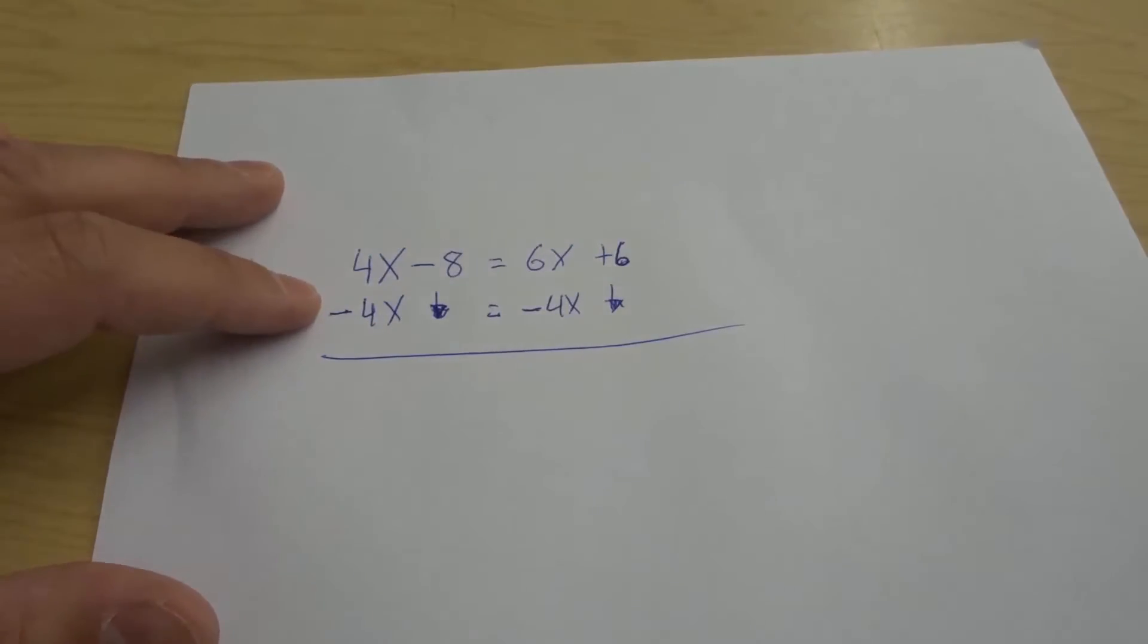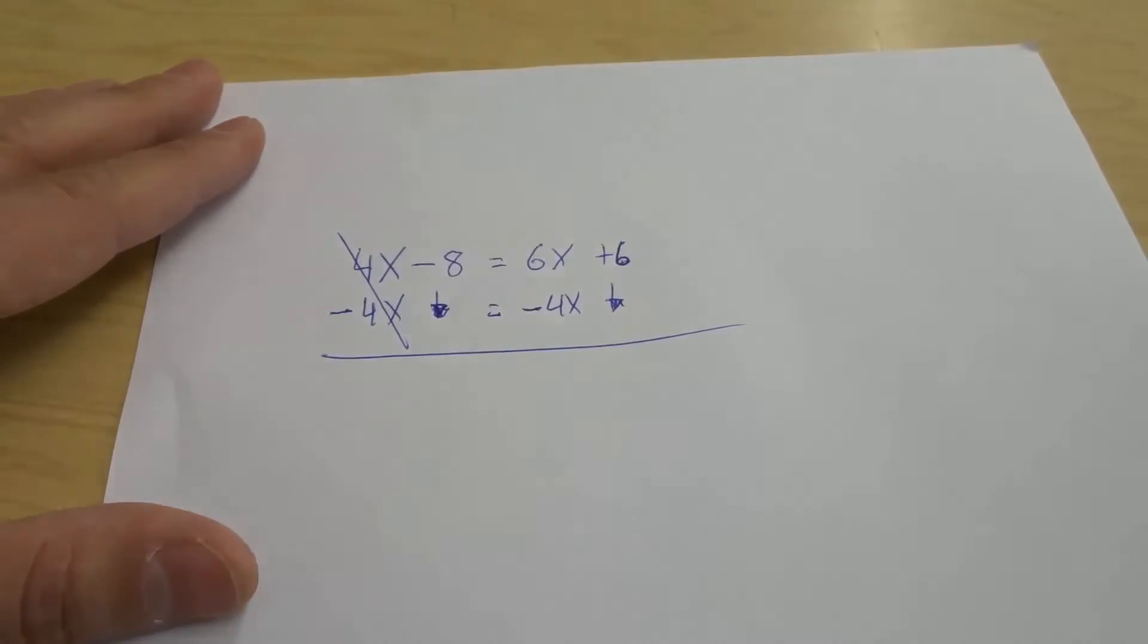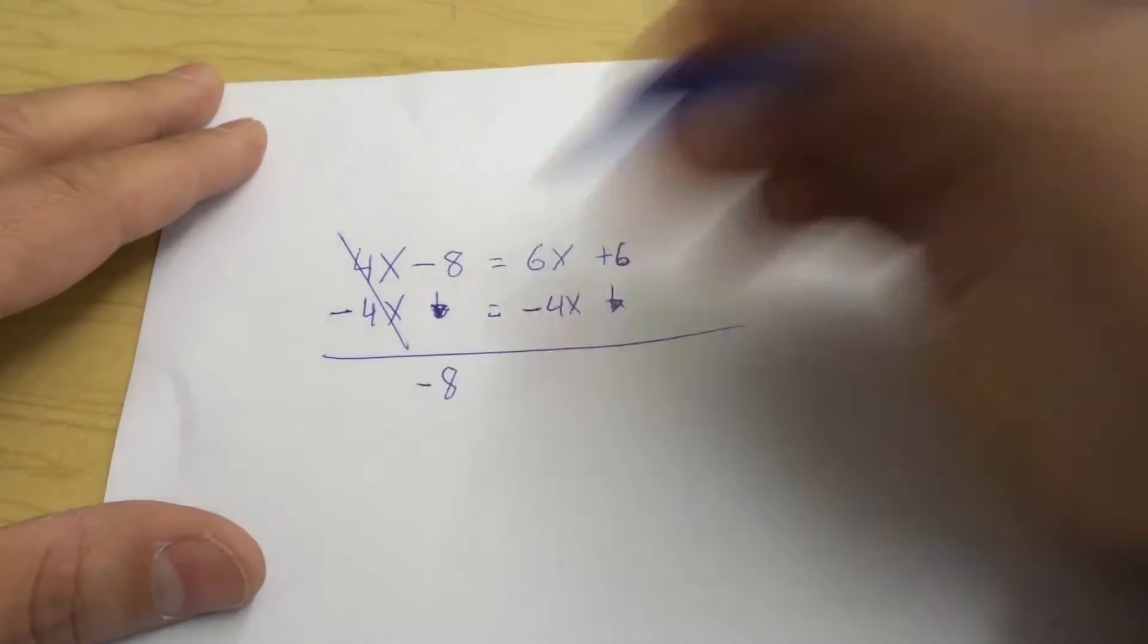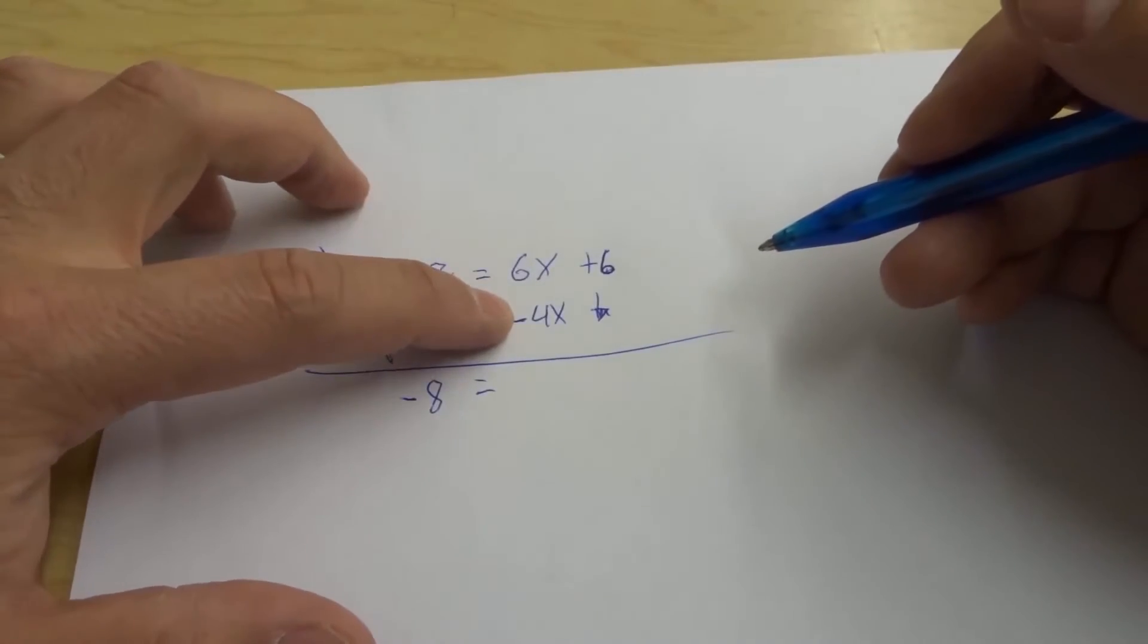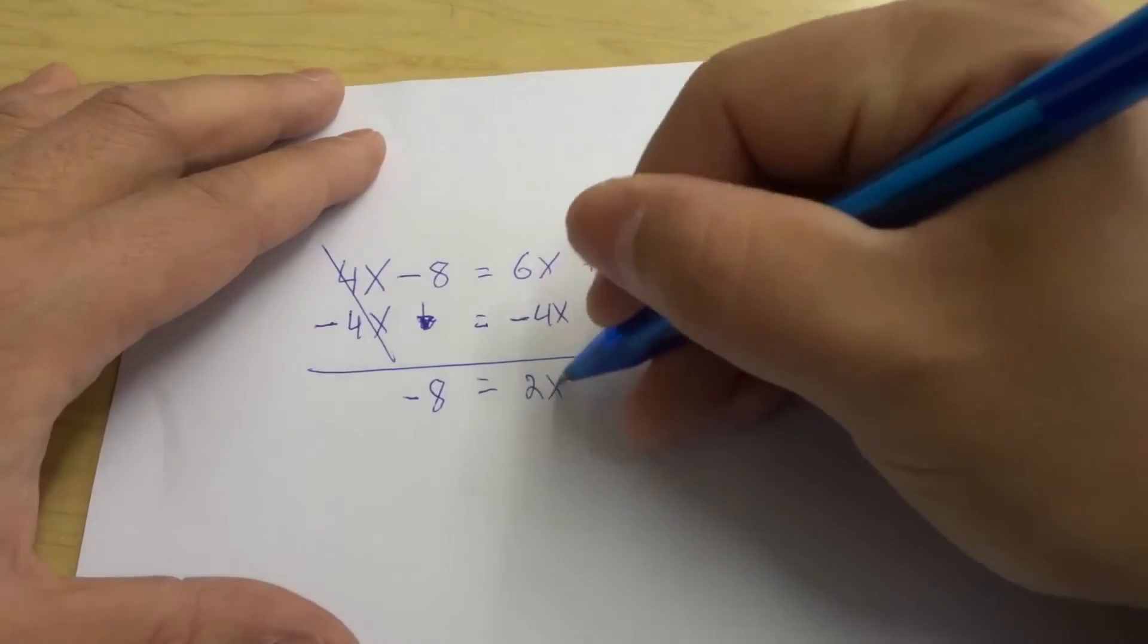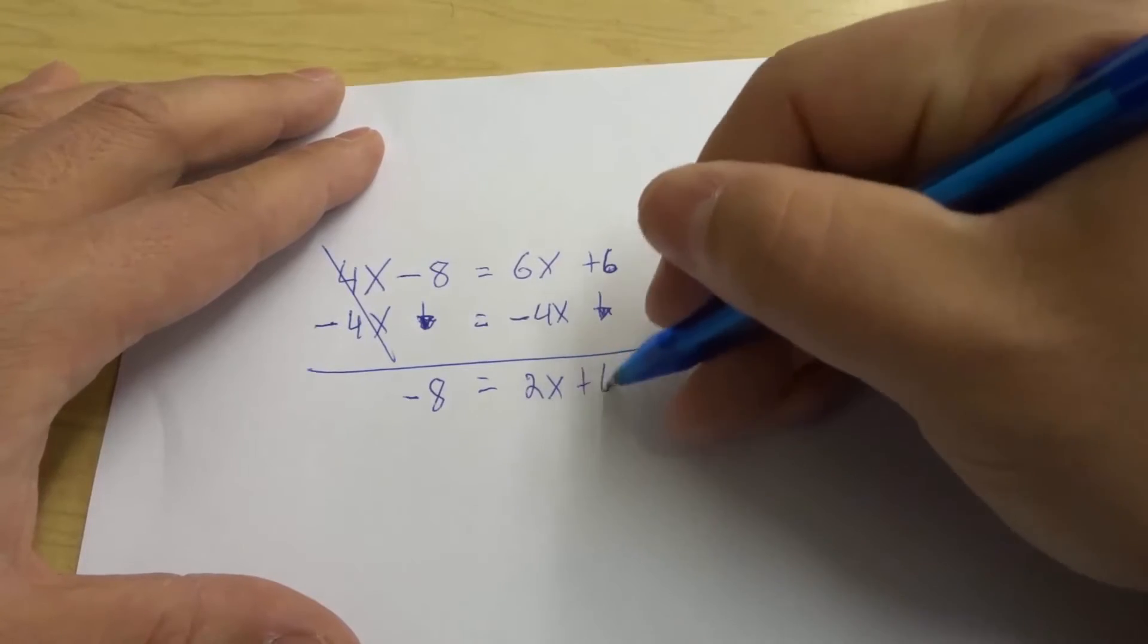So 4x minus 4x they cancel each other out so they don't exist anymore so all we have is negative 8 on this side and then is equal to 6x minus 4x is 2x and then plus 6 over here.